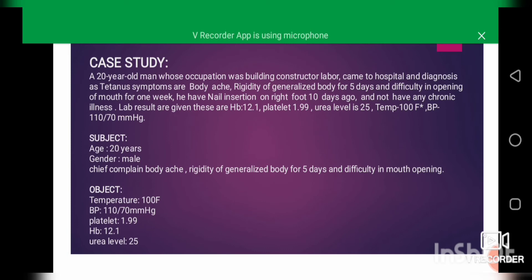Case study: A 20-year-old male construction worker came to the hospital with a diagnosis of tetanus. His symptoms included generalized body rigidity for five days and difficulty in opening his mouth for one week. He had a nail insertion on the right foot eight days ago and has no chronic illness.